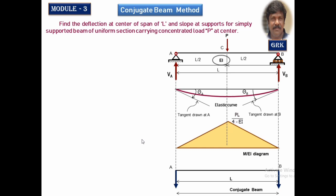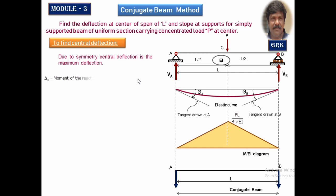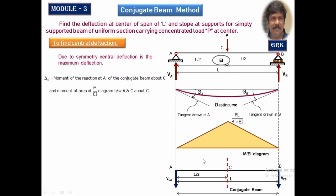Let us calculate the deflection. The deflection will always be maximum at the centre due to the point load acting there. According to the second theorem of the conjugate beam, deflection at C depends on the reaction and the area bounded between A and C. We take a section at C. The bending moment is taken about the centre with respect to the reaction and the moment of the area of the M by EI diagram between A and C. This area acts at a distance one-third of the span from A, which is L by 2.